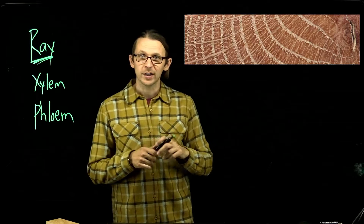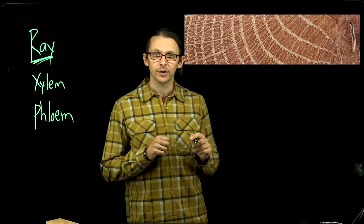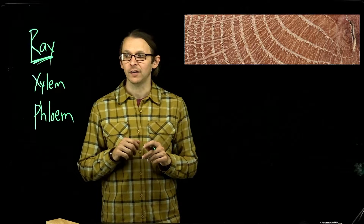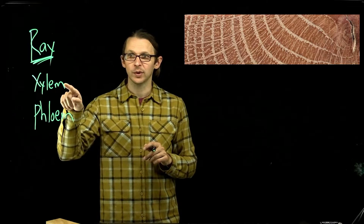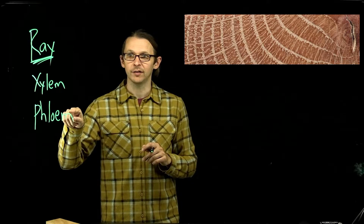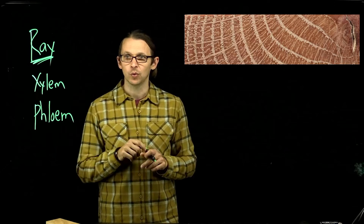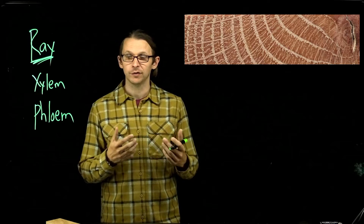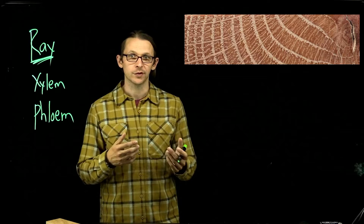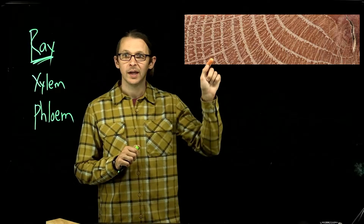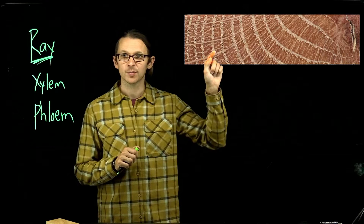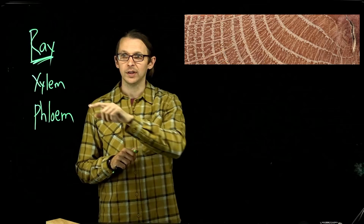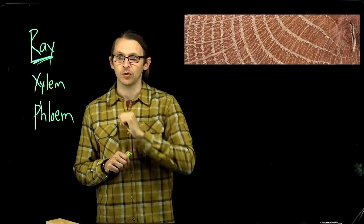Rays provide two fundamental properties. They form the hydraulic nexus between the xylem and the phloem. For the phloem to work, water needs to be able to move from the xylem to the phloem at both the source and the sink phloem. The rays provide the mechanism by which water is moving between these two transport tissues.